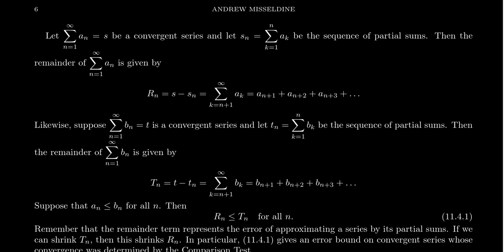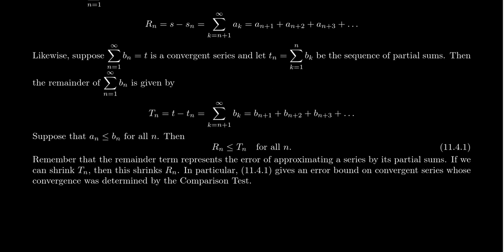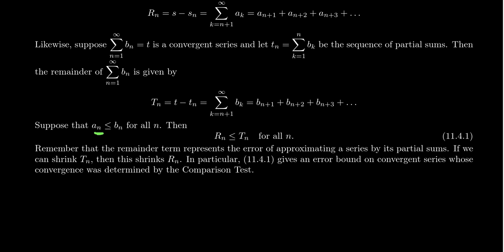Now, if we know that this series is convergent by the comparison test, there was a series we compared it to. Take a new convergent series — the sum where n equals 1 to infinity of b sub n — that adds up to the number t. It also has partial sums t sub n, the sum of the first n terms of b, and a remainder capital T sub n equal to t minus t sub n. So we have two convergent series in play: the a series and the b series. Let's say the a series converges because it's less than the convergent b series.